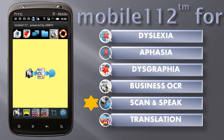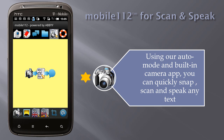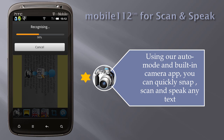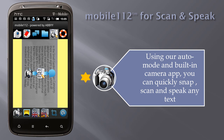Mobile 112 Scan and Speak. Using Auto Mode and the built-in camera app, you can quickly snap, scan, and speak any text. Tap the Auto Mode button, then tap anywhere on the screen to take the picture. The photo is quickly converted to text and spoken. If you want to view the text, press the type and speak tab.